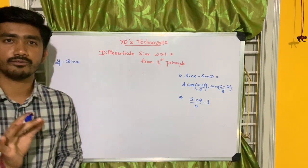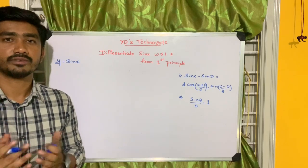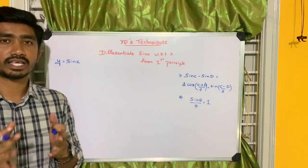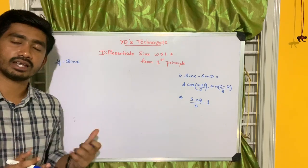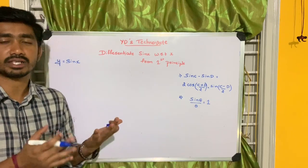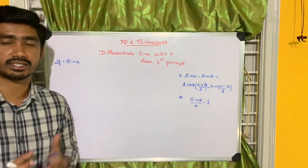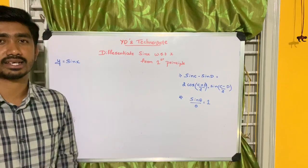So initially, y is equal to sine x. In differentiation, there is a change in value. So the value of y changes to y plus delta y, and the value of x changes to x plus delta x.